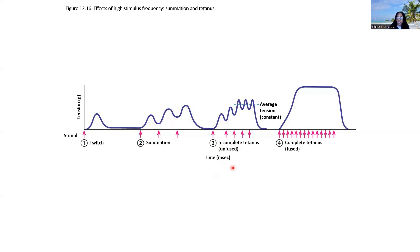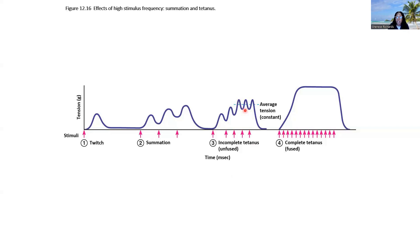If we increase the frequency of action potentials even more, we get into what's called tetanus. The first stage is incomplete or unfused tetanus, where very little relaxation is happening in between. We have our first action potential, slight relaxation, even more force generation from the subsequent action potential, and then we reach a period where maximum force has been achieved — the muscle is generating as much force as it can, and that will plateau.